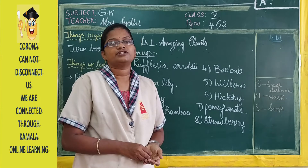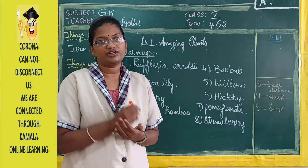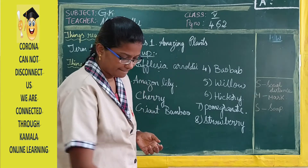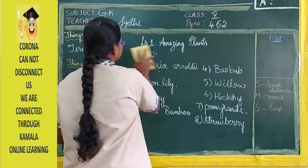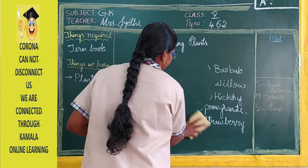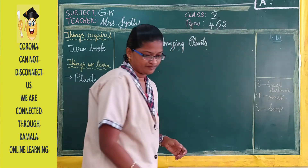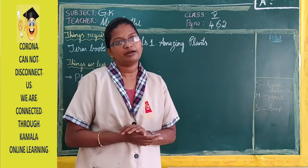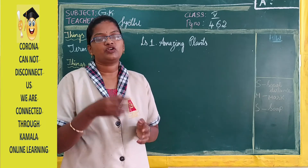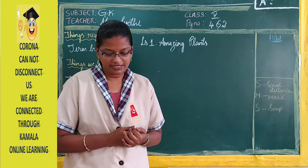Now everyone take out your classwork book and first maintain the index. Write Lesson number 1: Amazing Plants in the index. Then turn the pages and write today's date and Lesson 1: Amazing Plants as the heading.